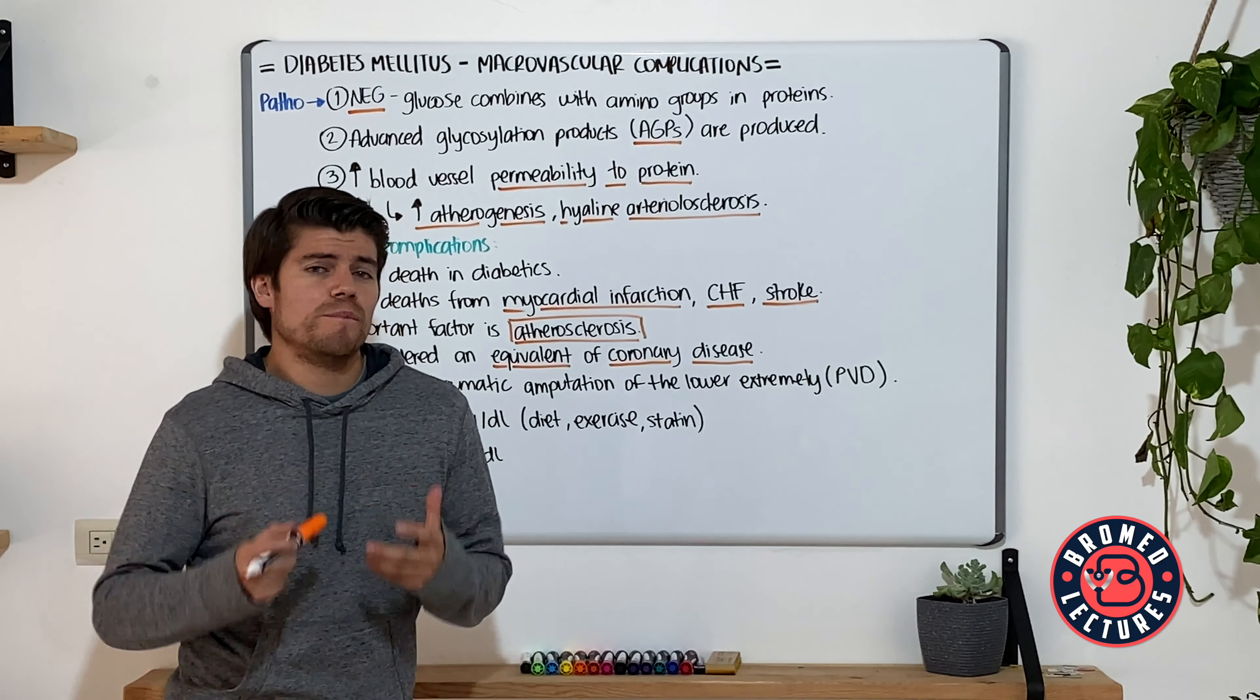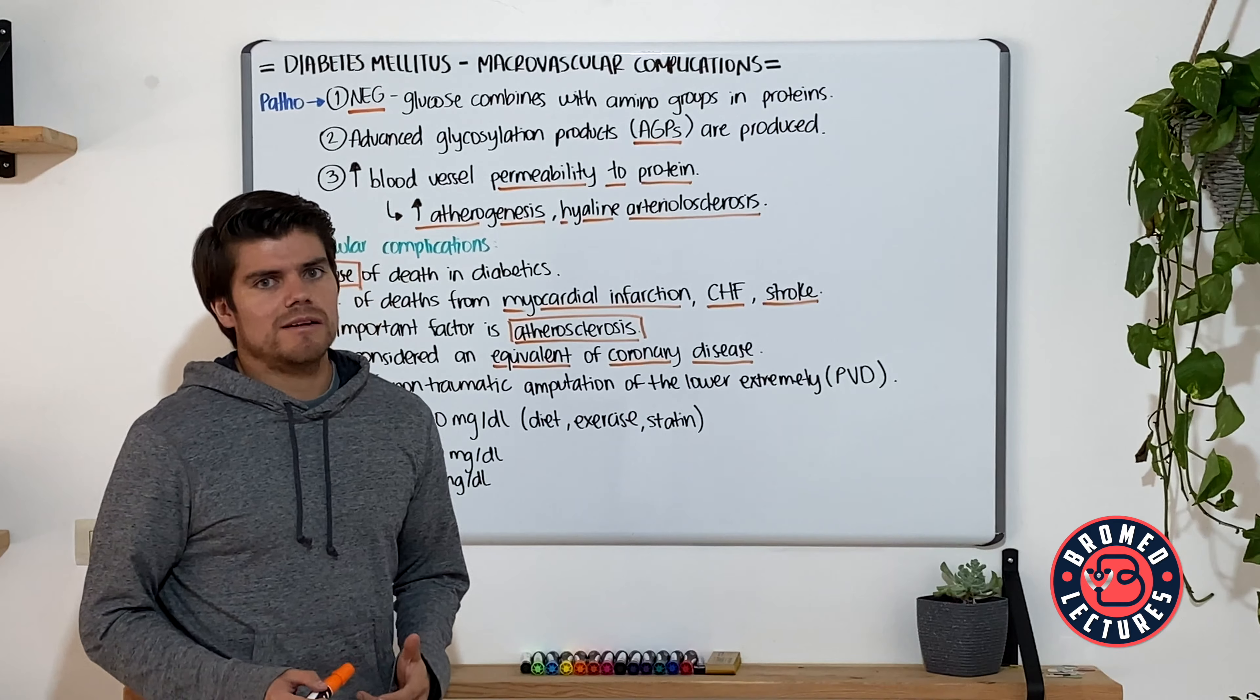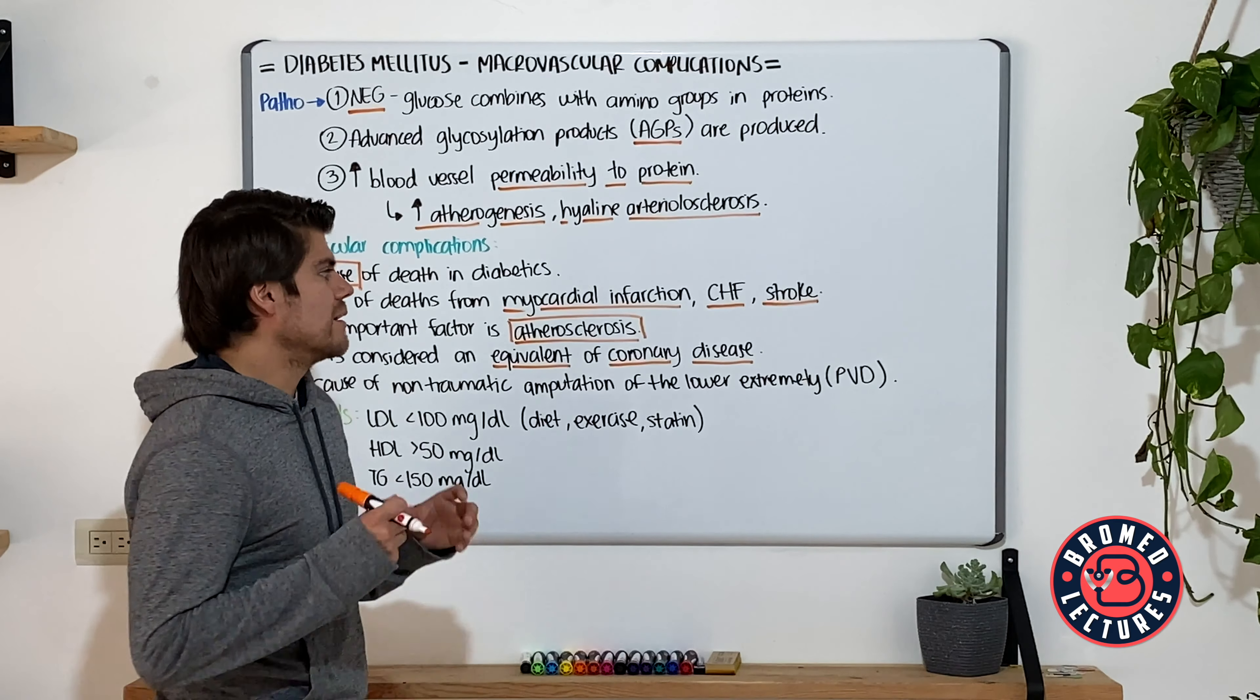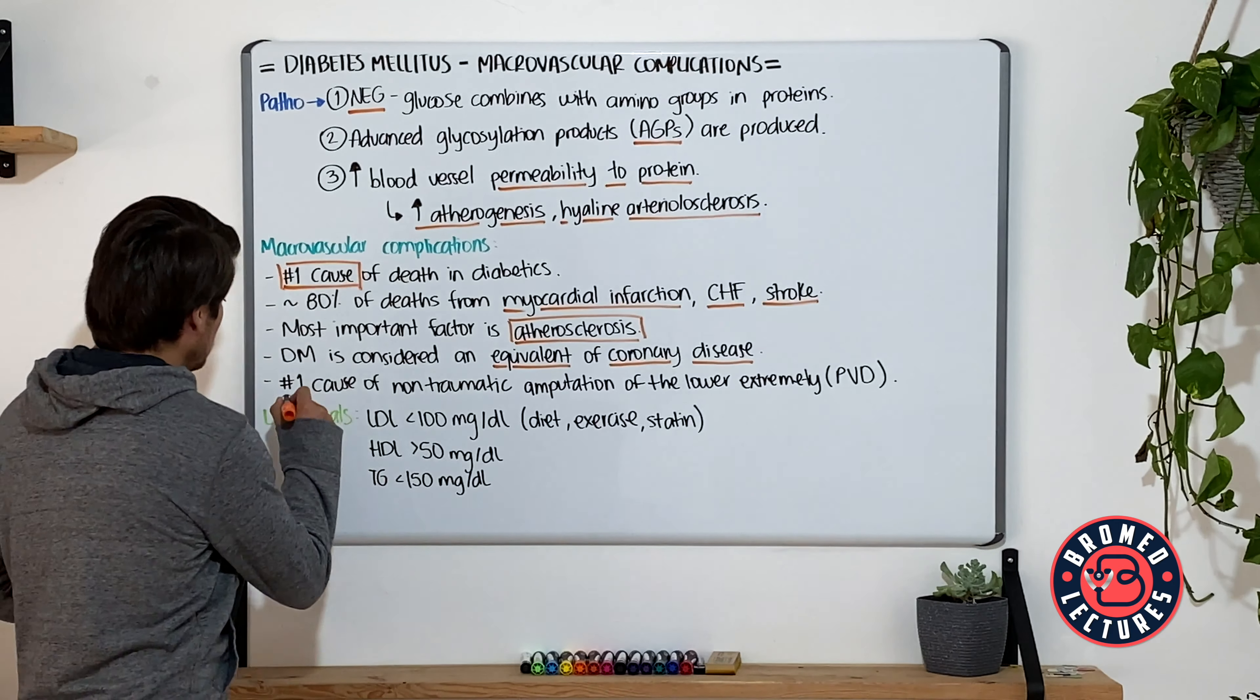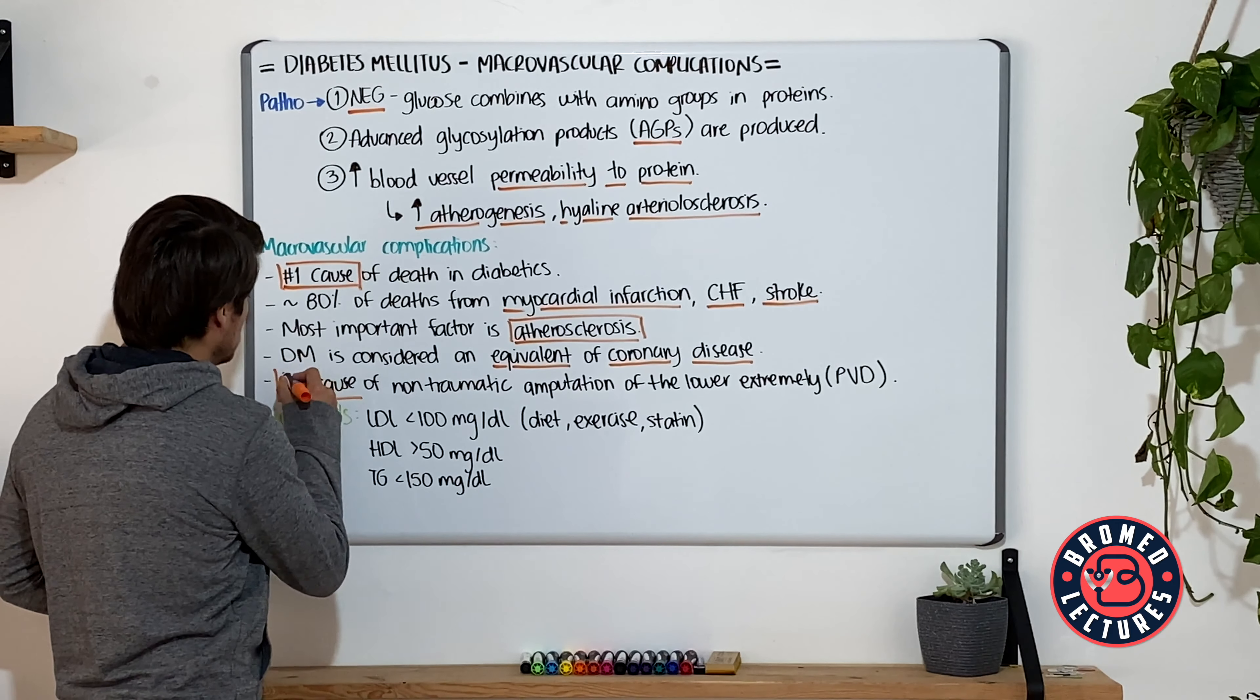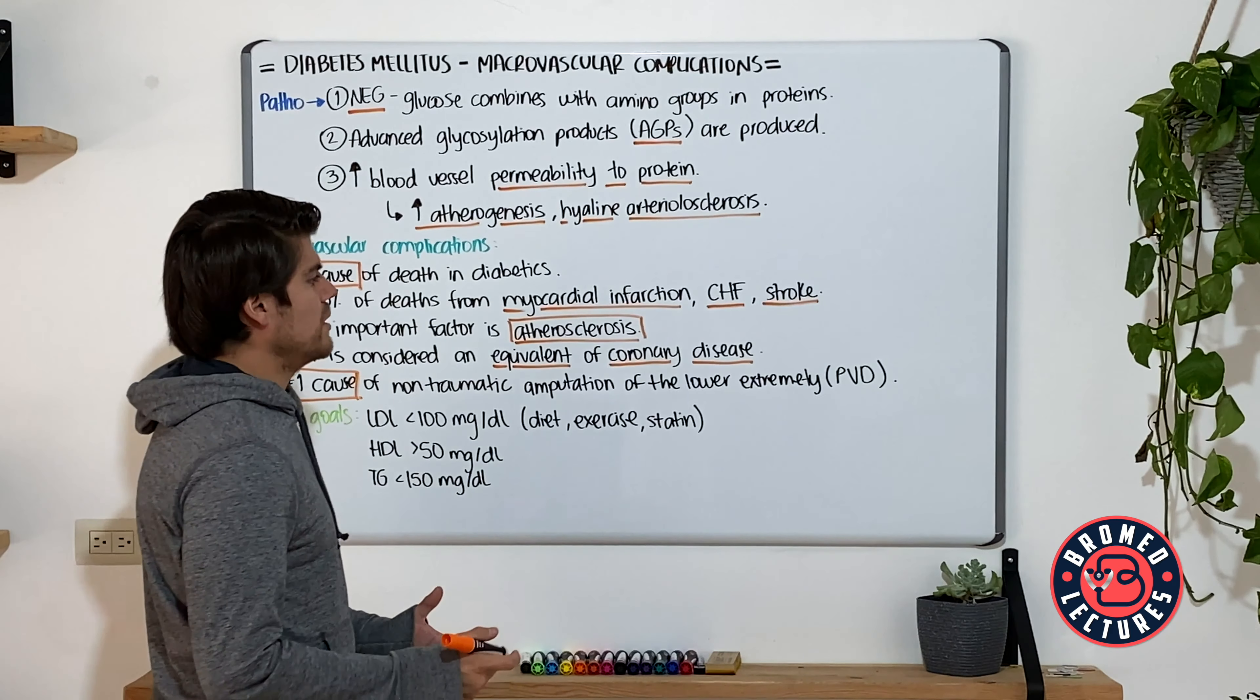Remember that if some patient has coronary artery disease already, they have an increased risk for myocardial infarction, for peripheral vascular disease, for congestive heart failure, and stroke. And so if a patient does not have coronary artery disease, but has diabetes mellitus, it is considered to have an equivalent of such.